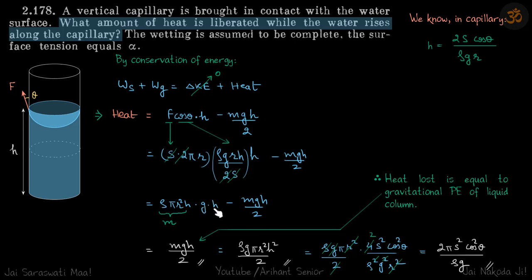A lot of terms will get cancelled and you'll be left with ρ into πr²H into gH minus mgH by 2. Now ρπr²H is the volume of the liquid column, so this is mass. So this becomes mgH minus mgH by 2, which is mgH by 2.